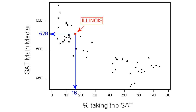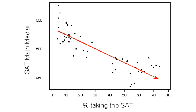For example, in Illinois, in the year these data were collected, 16% of the students took the SAT, and their median score on the math part was 528. Notice that there is a negative relationship between the percentage of students who take the SAT in a state and the median SAT math score in that state.